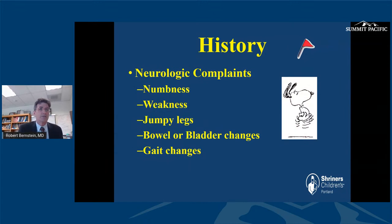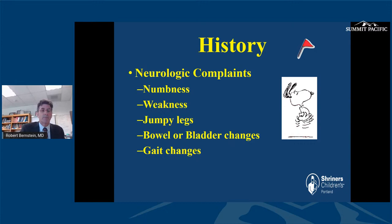In the history, we'll also address neurologic complaints — numbness or weakness, jumpy legs, bowel or bladder changes, and gait changes. Are they having difficulty walking or stumbling? These things would indicate that there is a neurologic problem going on.